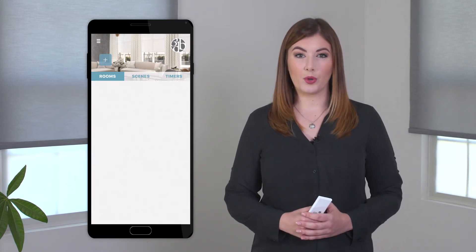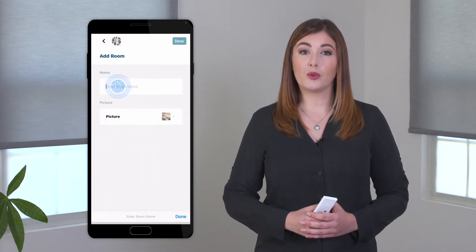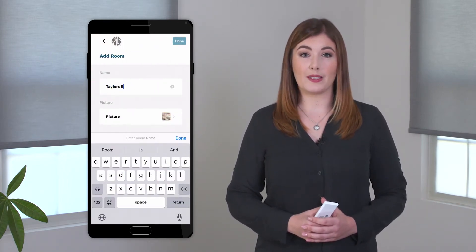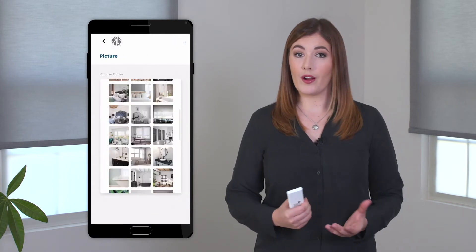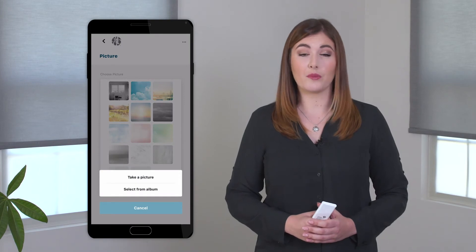To create a custom room, tap the blue plus sign and then select add room. Give your room a name and choose which picture best represents your room, or at the bottom of the app, you will notice a plus button that will allow you to take a picture or add a photo from your library.